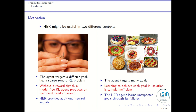The first context is a sparse reward problem where the agent is targeting a difficult goal and only very few accurate policies can succeed. Without a reward signal, a model-free reinforcement learning agent produces something very inefficient, corresponding to a random search, and it may take a very long time before it finds the reward.